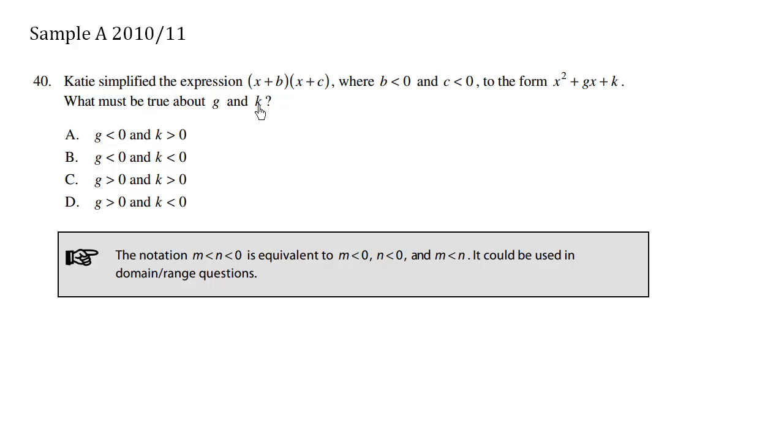Katie simplified the expression (x + b)(x + c), where b < 0 and c < 0, to form x² + gx + k. What must be true about g and k?